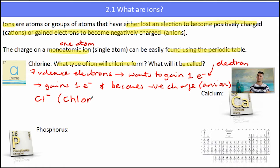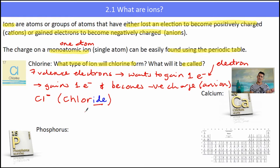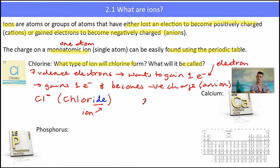Cl⁻ is the same as Cl minus 1. Because it's a non-metal, its name will slightly change — we change the last part of the name to '-ide'. So it would be called chloride. For ions, we change the last name of non-metals only.